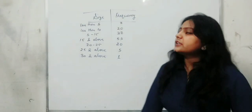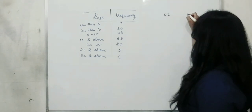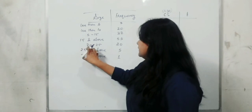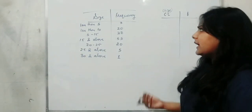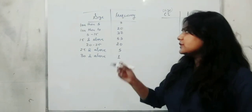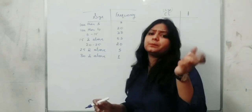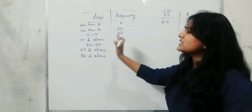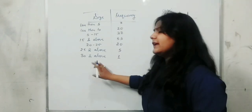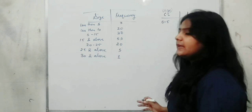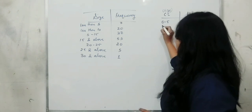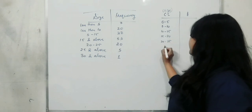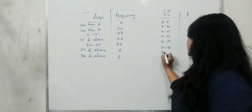So, to convert correctly into CI, first make two columns — one for class interval and one for frequency. Here the numbers given are 5, 10, 15, 20, 25, 30 — from this you can immediately identify that the class interval width is 5, i.e., the difference between lower limit and upper limit is 5. So you start from 0 to 5, then 5 to 10, 10 to 15, 15 to 20, 20 to 25, 25 to 30, and finally 30 to 35.